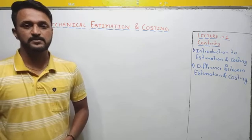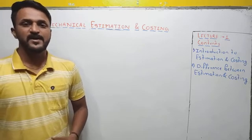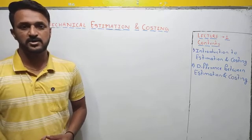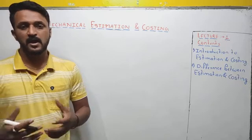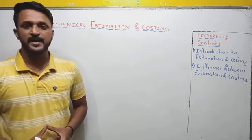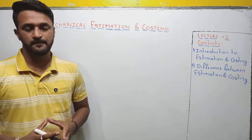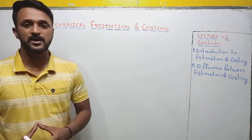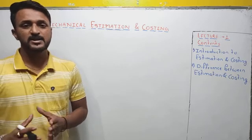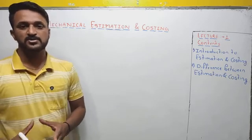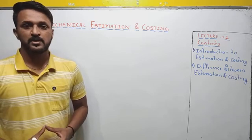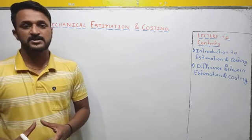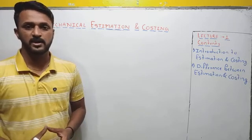Let us begin with some examples. When a person plans to build a dream house, he visits a civil engineer. He conveys his idea, and according to the idea, the civil engineer prepares a construction plan. Along with that, the civil engineer will come up with a probable or approximate cost of the project — the cost which is likely to be incurred during the construction of the building. The engineer will convey this cost to the person.